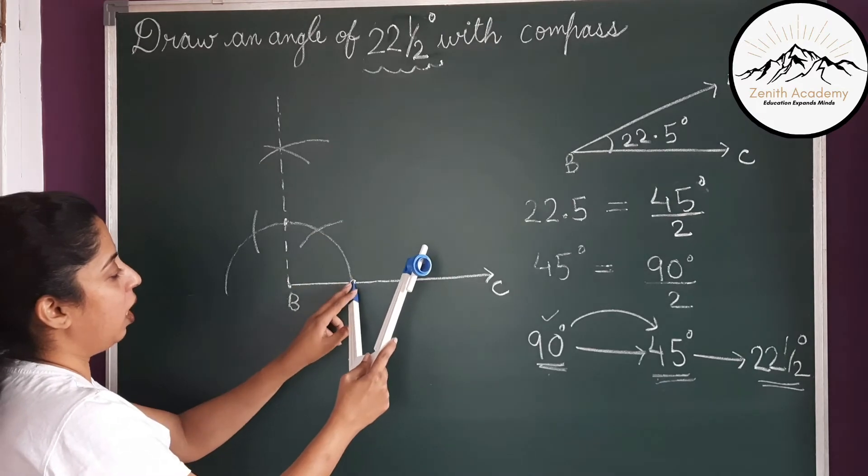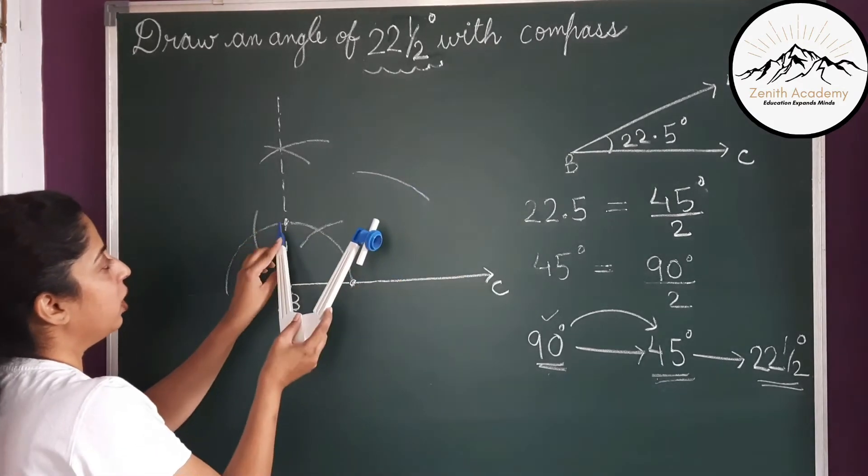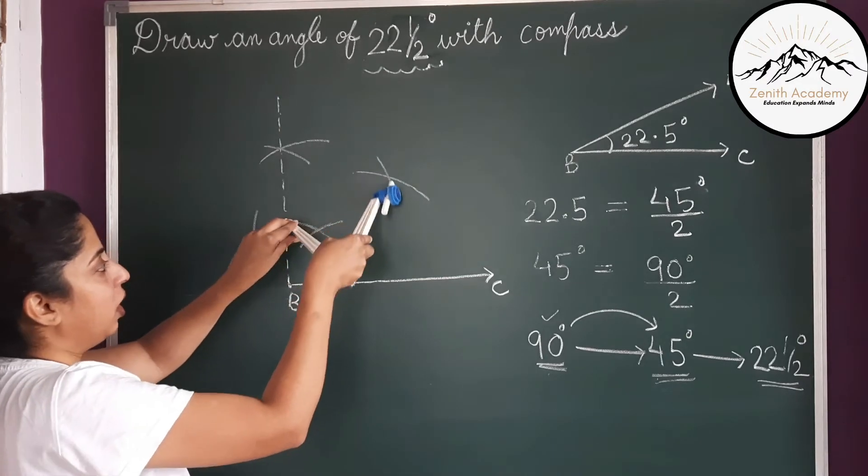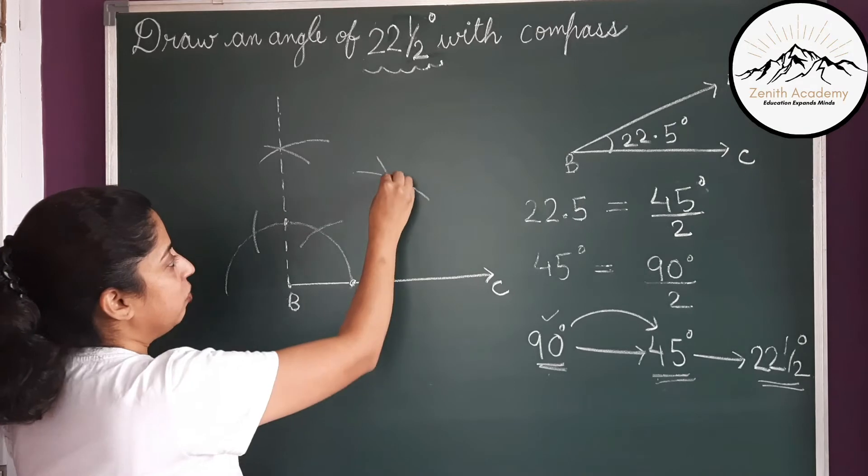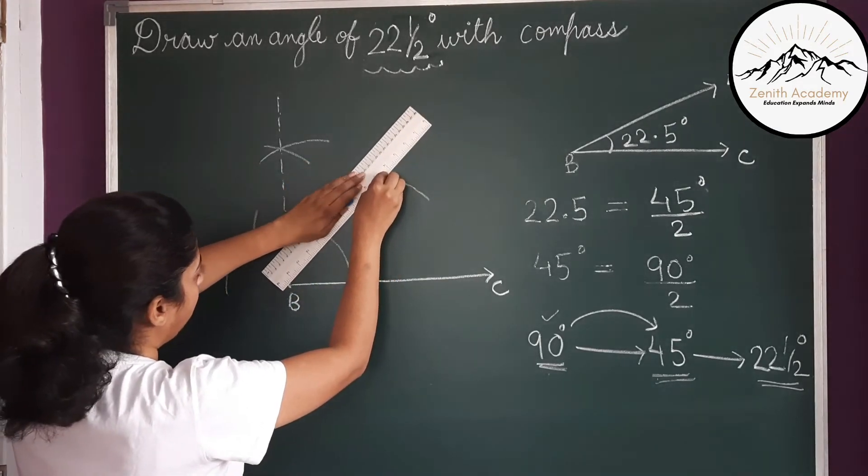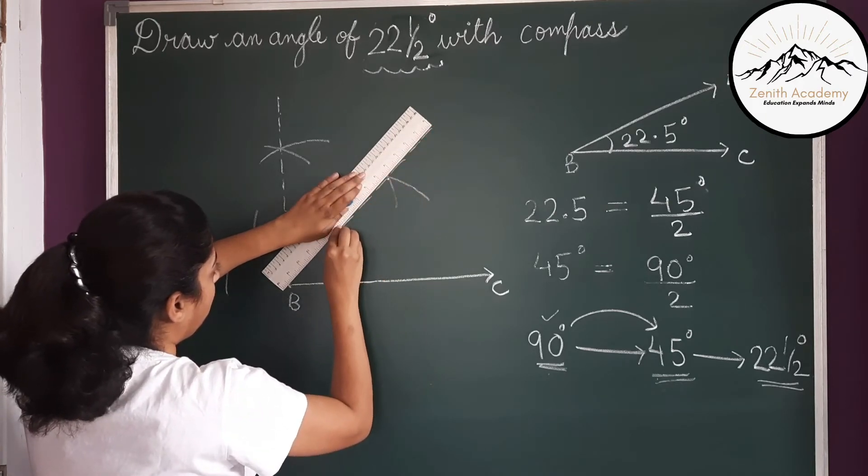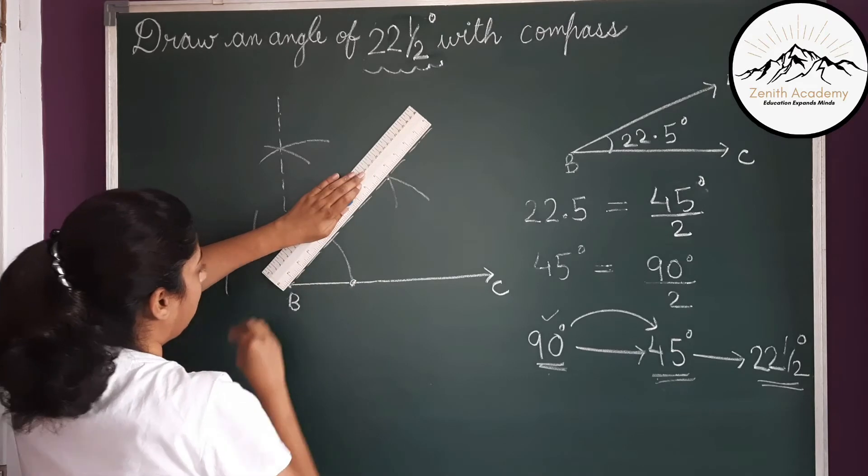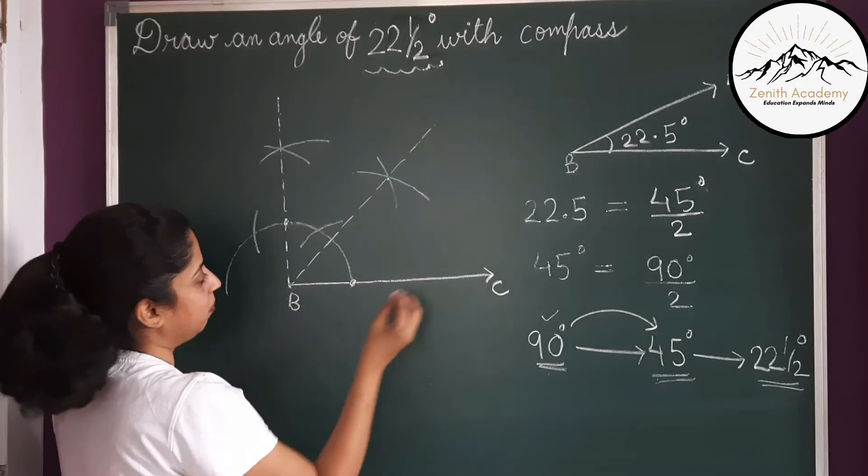Keep the point at one end of the angle. Draw an arc. Keep this point at another end of the angle and cut the arc. So this is the point of intersection. So we will join this point of intersection and vertex B. So now this angle is 45 degree.